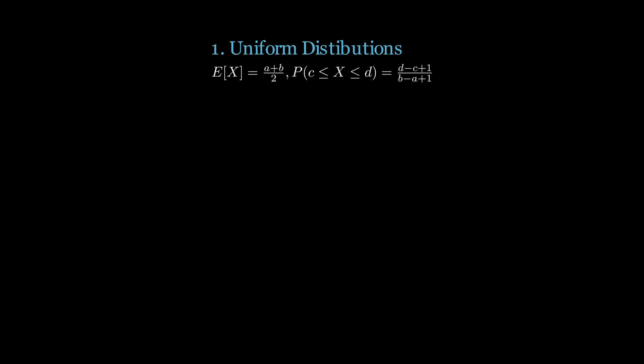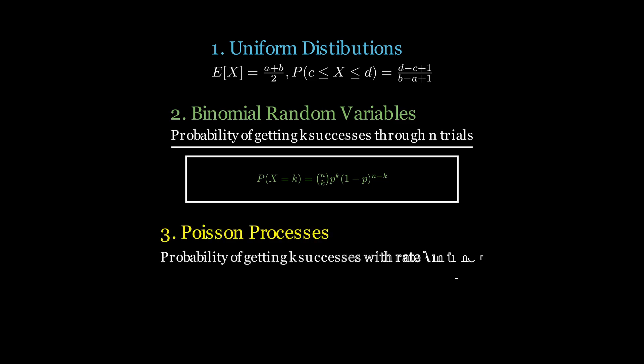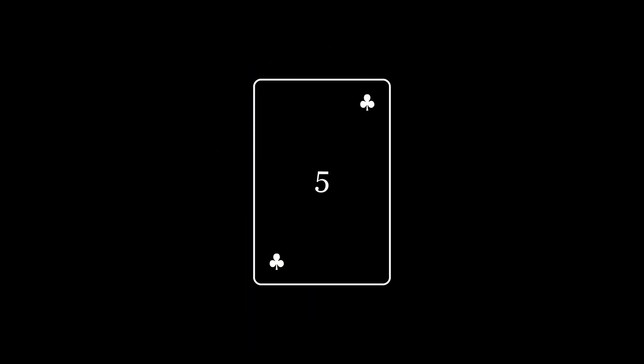You could therefore easily determine the average number of successes that will occur in the next tau time units by computing lambda tau. In this video, we learned about the uniform distribution and how to utilize simple tricks to calculate useful information about discrete uniform distributions spanning fixed intervals. We also brushed up on binomial distributions, which govern the probability of getting k successes through n Bernoulli trials, and Poisson distributions, which determine the probability of getting k successes during a time horizon tau and an arrival rate lambda. Thanks for watching, and please subscribe to the channel for more content on probability, logic, and beyond.